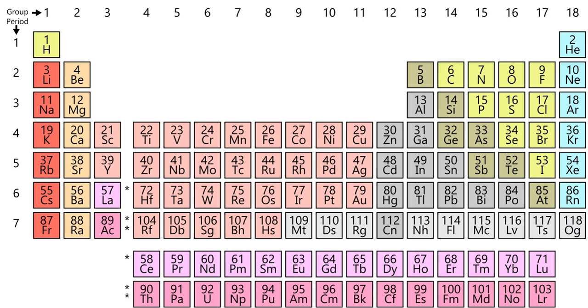118 elements have been identified, of which the first 94 occur naturally on Earth with the remaining 24 being synthetic elements. There are 80 elements that have at least one stable isotope and 38 that have exclusively radionuclides, which decay over time into other elements.